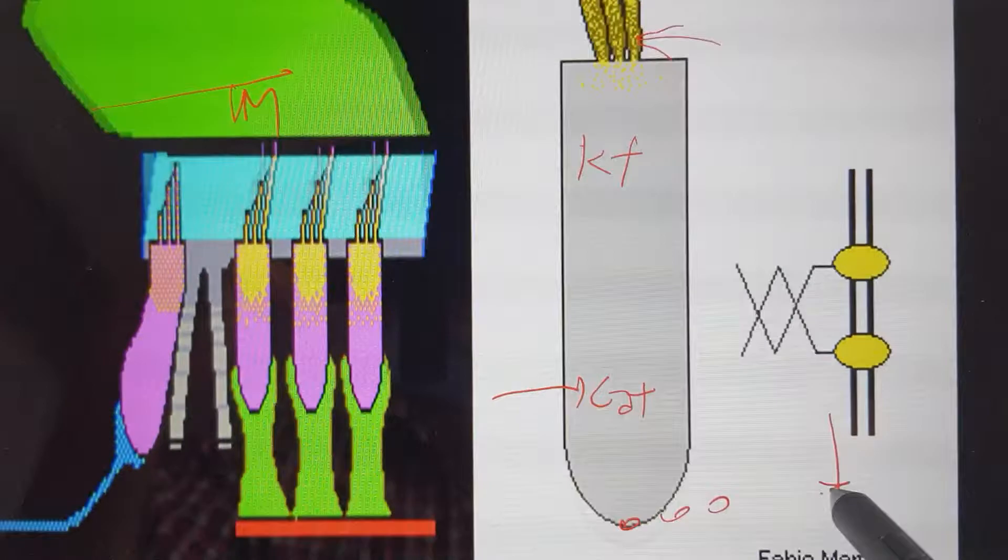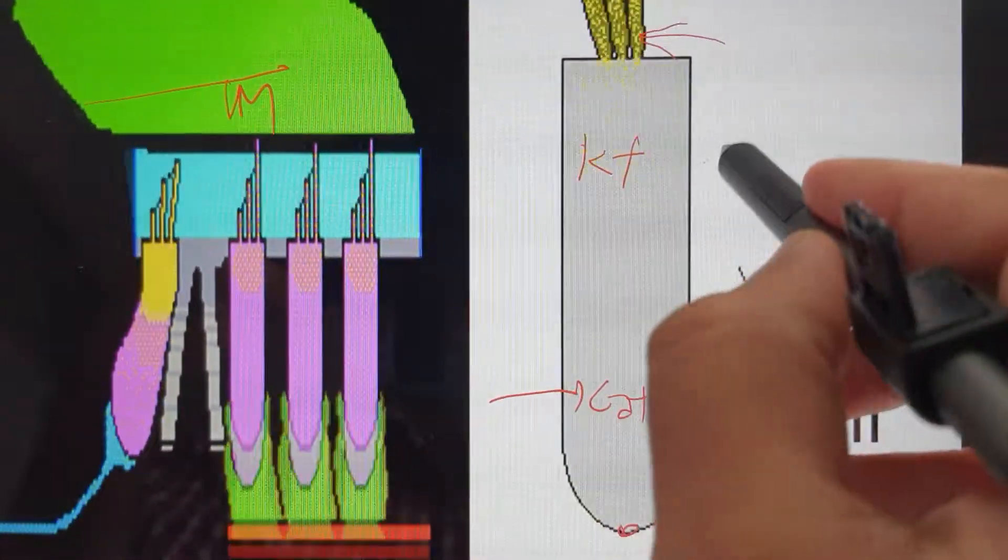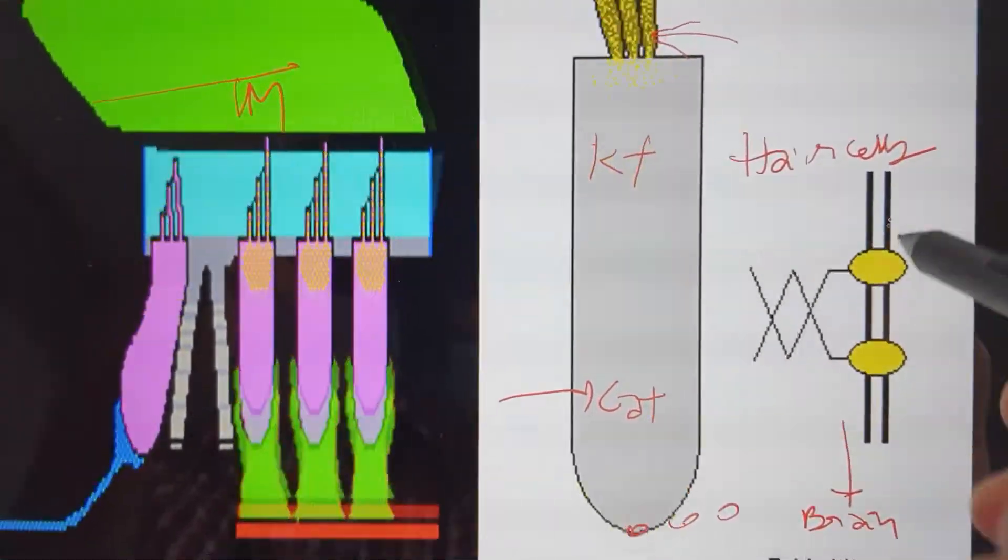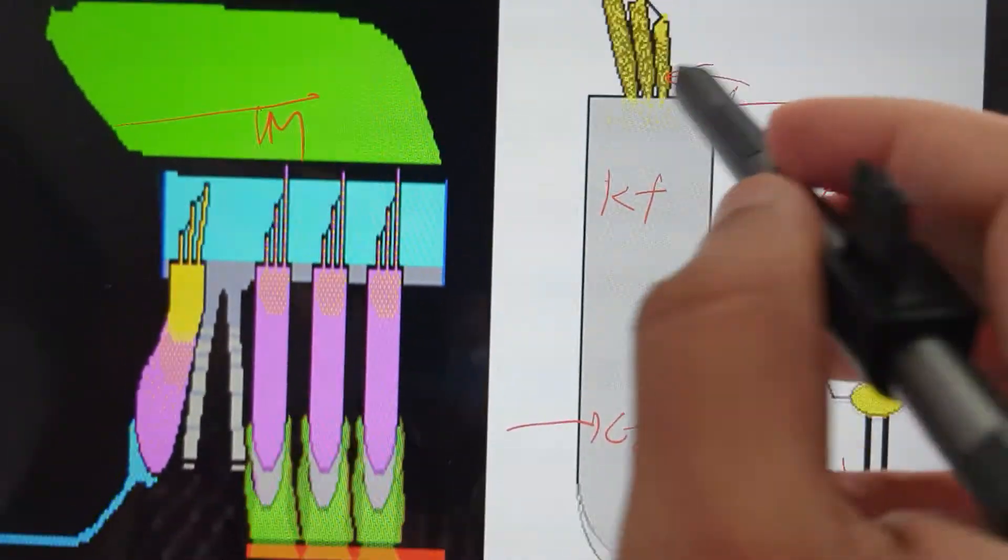These are nothing but your hair cells. These are your hair cells and they are producing the depolarization towards the kinocilium.